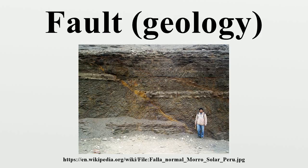Dip-slip faults can occur either as reverse or normal faults. A normal fault occurs when the crust is extended — also called an extensional fault — and the hanging wall moves downward relative to the foot wall. A downthrown block between two normal faults dipping towards each other is called a graben, and an upthrown block between two normal faults dipping away from each other is called a horst. Low-angle normal faults with regional tectonic significance may be designated detachment faults.